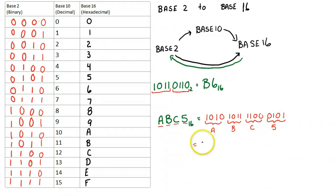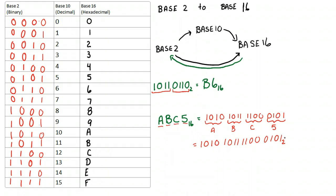And that's all there is to it. ABC5 in base 16 converted to base 2. You will actually see sometimes when people are writing out base 2 numbers, they'll break them up into groups of 4, and this is the reason for that.